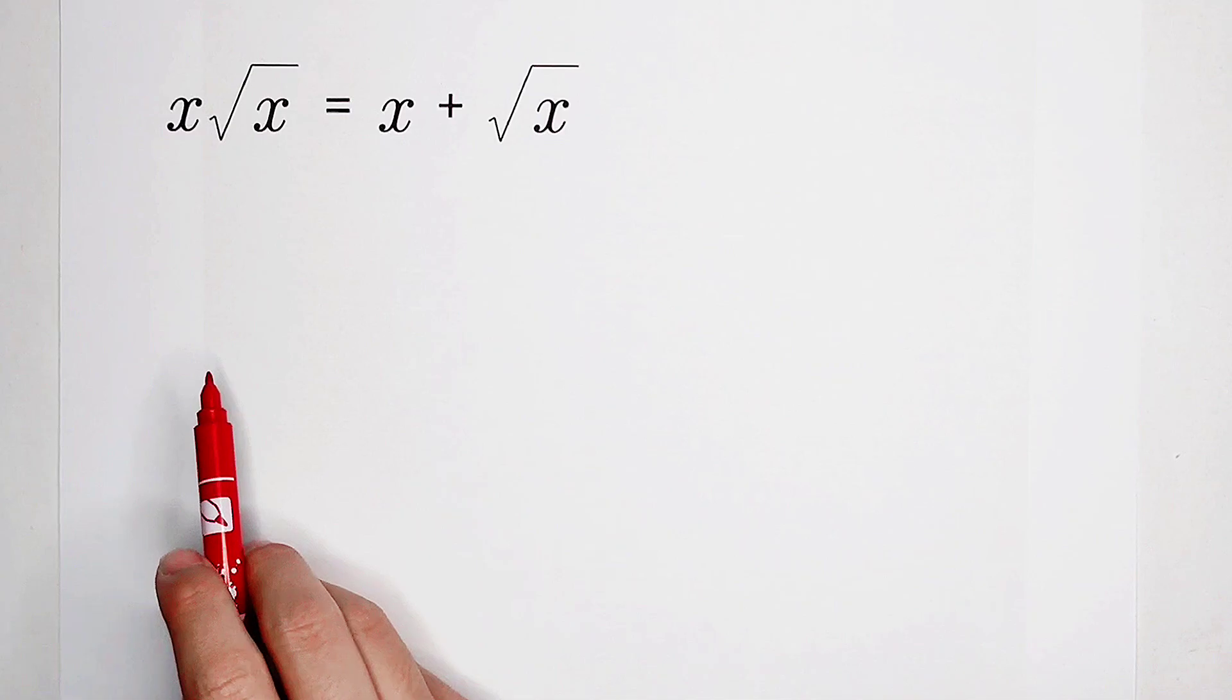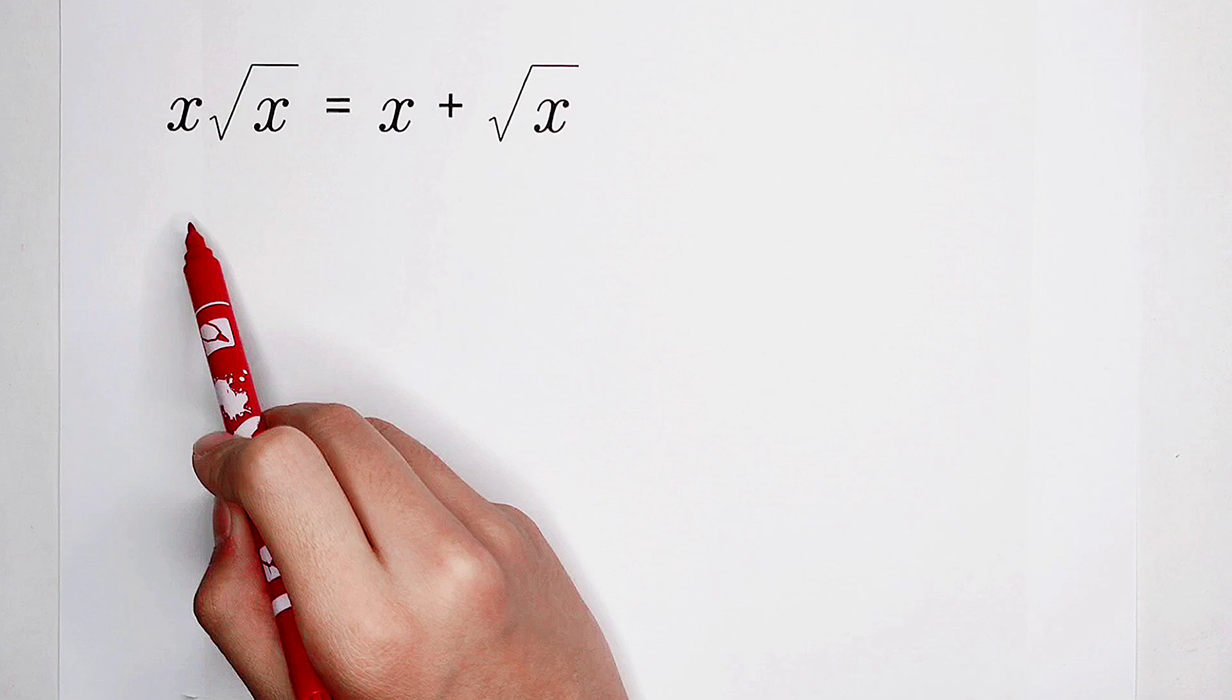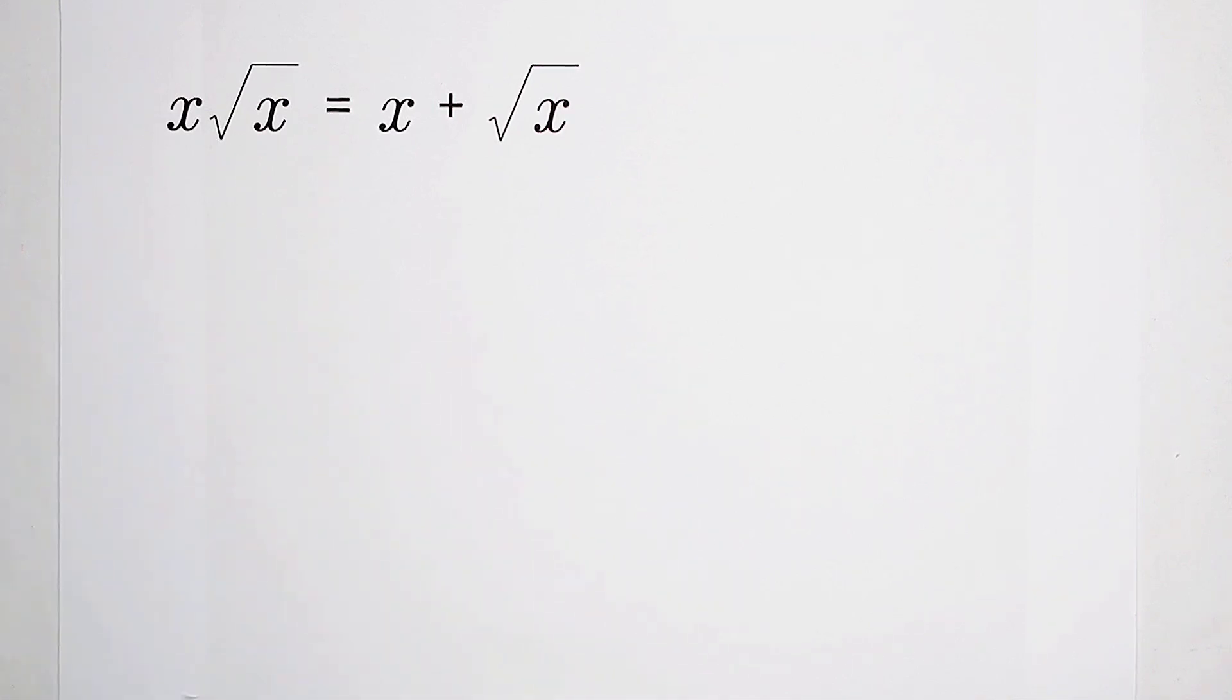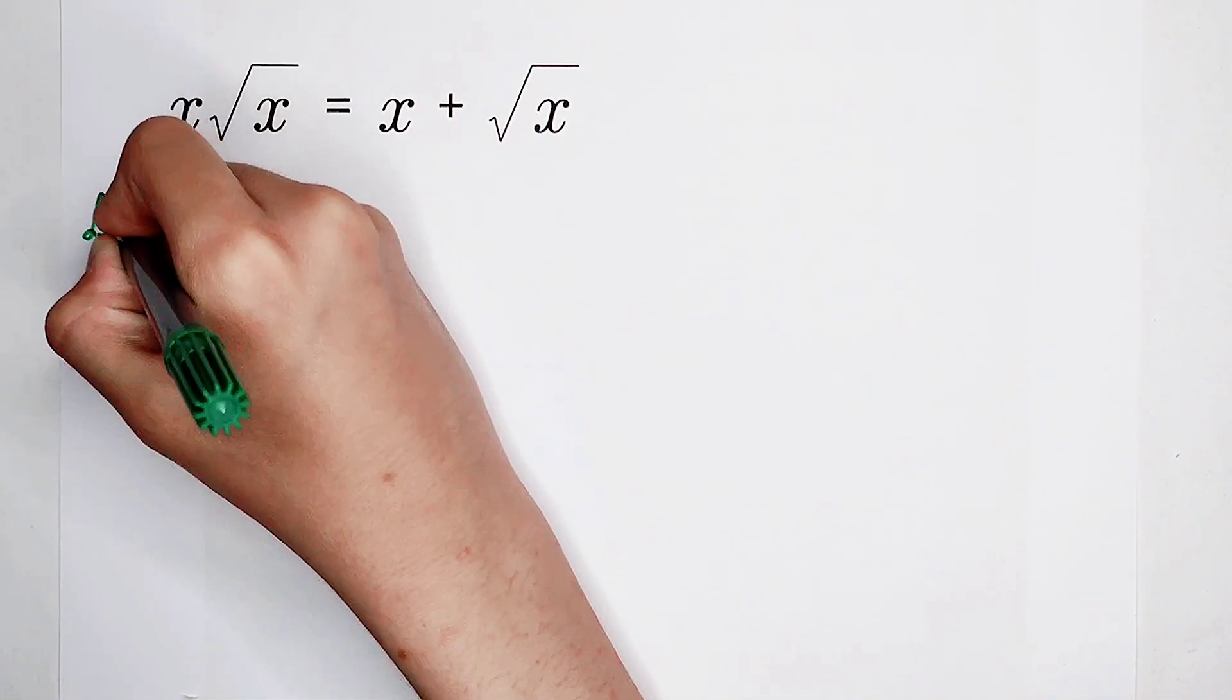So what should we do? Of course, first, x and square root of x, they have a relationship. That is, squared. So firstly, what should we do? Of course, we have to let.